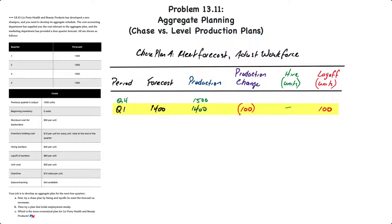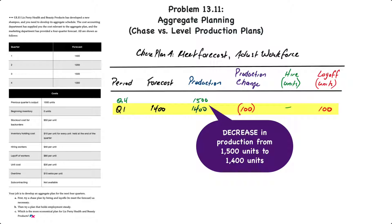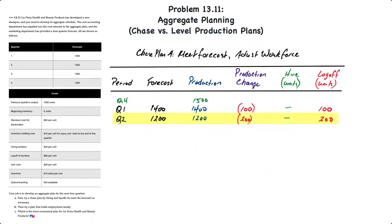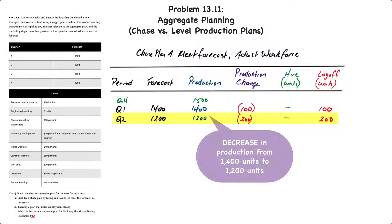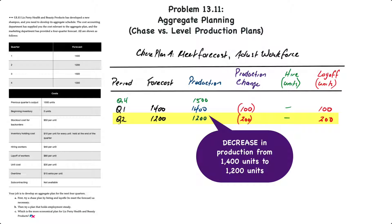In quarter one, the forecast is 1400 units and production is also 1400 units. Production has dropped from 1500 to 1400 units, a decrease of 100 units that will result in layoffs equivalent to 100 units. In quarter two, forecast and production are both 1200 units — the same because the chase plan meets the forecast — resulting in a change in production from quarter one of a reduction of 200 units, resulting in layoffs equivalent to 200 units.